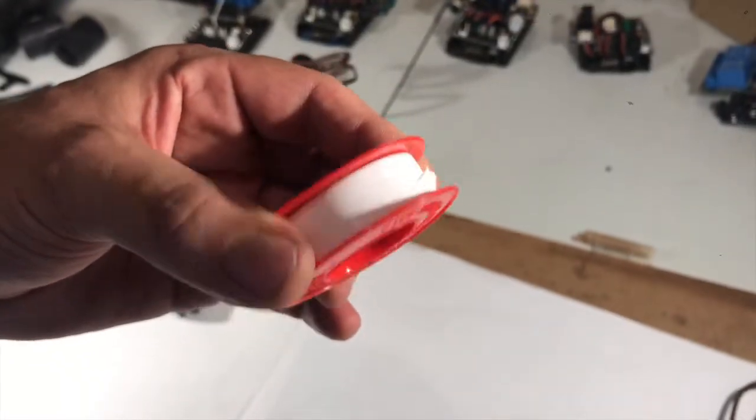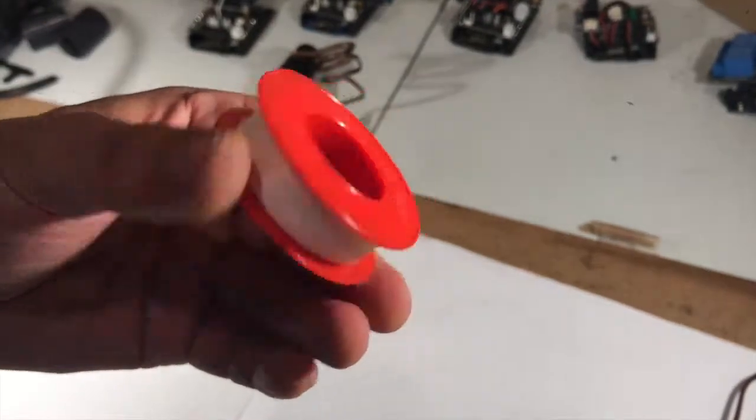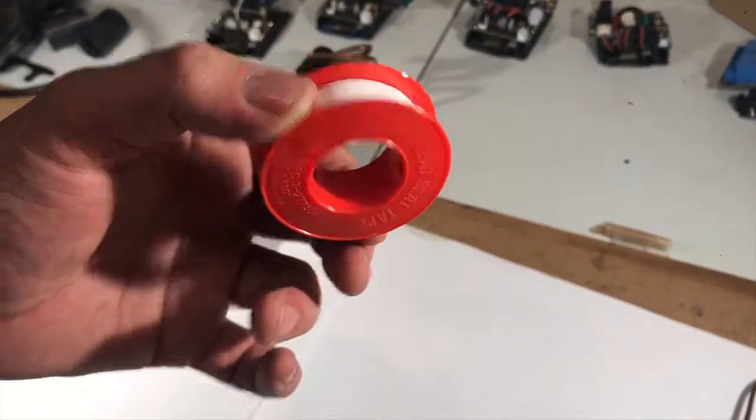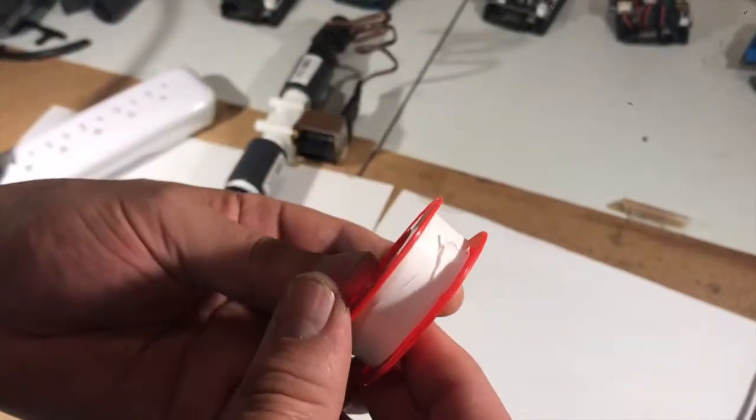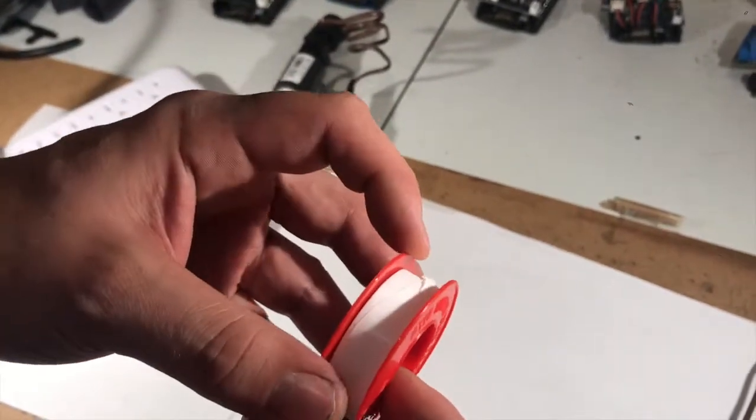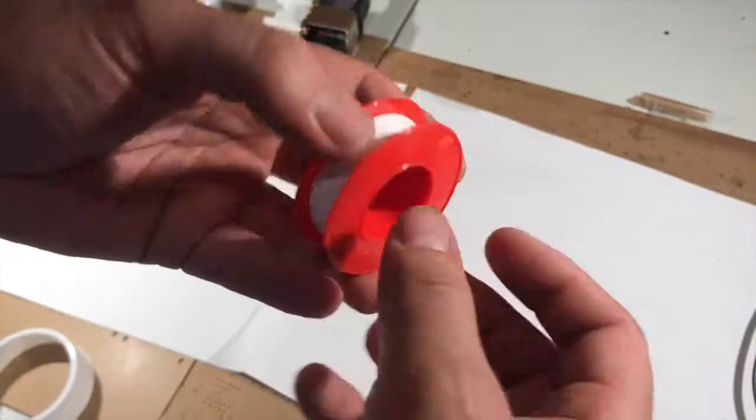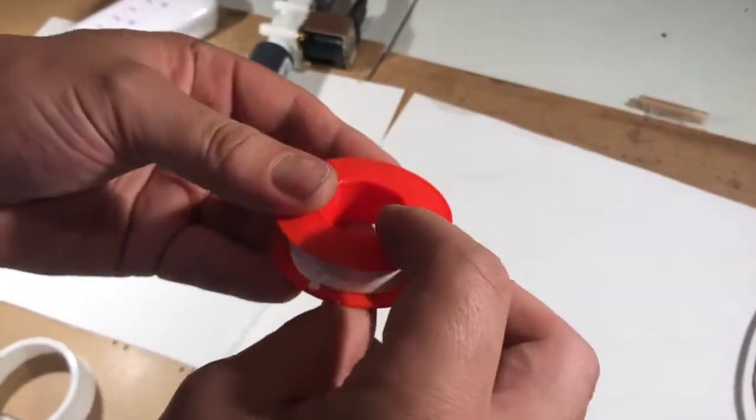So this is a threaded PVC sealant tape. This ships with our automatic garden kit as well. What you're going to do is you're going to use this to wrap around any threaded PVC you're going to connect to any other thread. So we'll show you how we're going to use that right now.